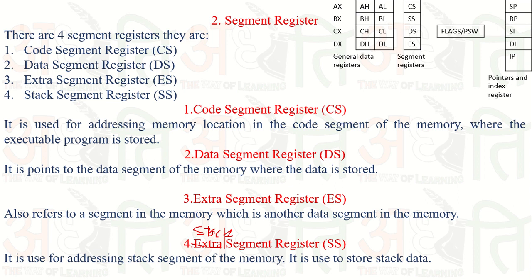Just like their names suggest, each segment register corresponds to its function: the code segment stores executable code, the data segment stores data, the extra segment is an additional data segment, and the stack segment register holds the stack segment address. So the segment registers store the addresses of the different memory segments.